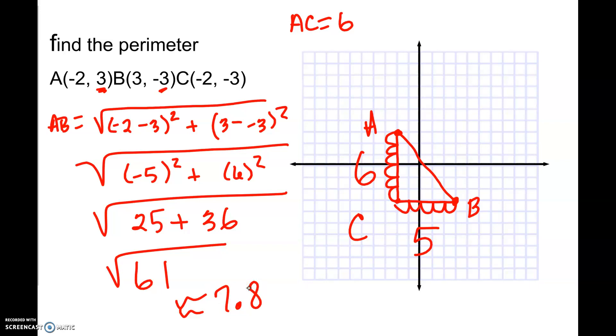Alright, to now find the perimeter, we're going to have to add up all three sides. So we're going to add up AC, which is 6, plus CB, which is 5, plus AB, which we found out was 7.8. So if we add up all three of those sides here, it looks like we're going to get 18.8. And I don't see any labels here, so I'm just going to say units. Alright, so there's finding your perimeter.